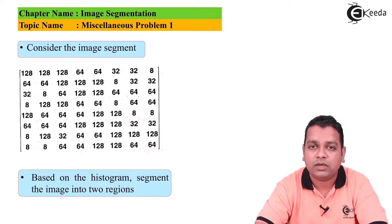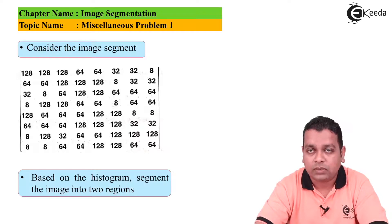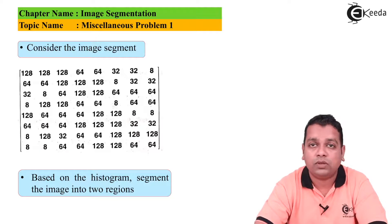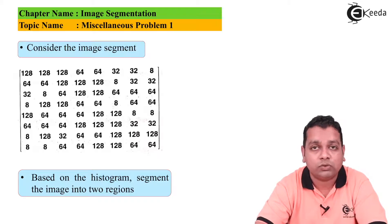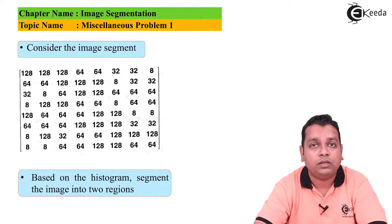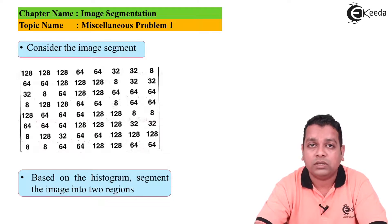Since we are asked to perform segmentation based on the histogram, we need to first form the histogram of the image. As demonstrated previously using MATLAB's imhist function, and as covered in the image enhancement chapter on spatial domain histogram equalization, a histogram is a plot where the horizontal axis represents the total number of possible gray level or intensity level values, and we mark the number of occurrences — how many times those particular gray level values appear in the image segment.